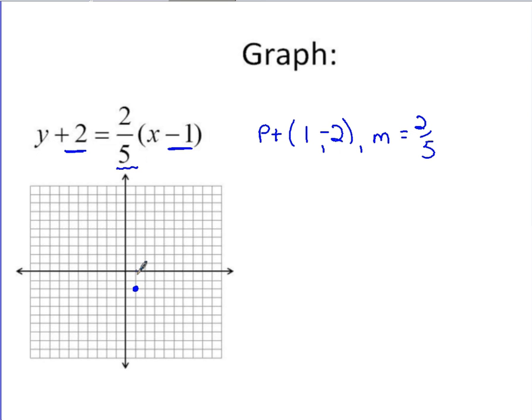We can count up two, we can go five to the right. One, two, three, four, five. Plot our second point. Two points determine the line, so we draw our line. Wow, that was beautiful. Alright, so if you're given point-slope form, that is a way to graph.